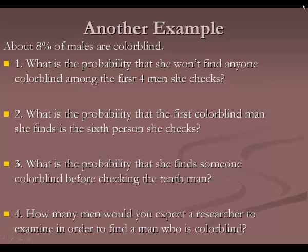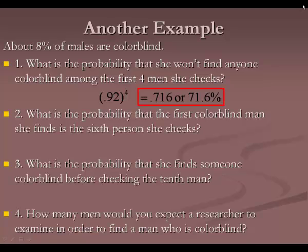Here's another example: about 8% of males are colorblind, and there are four questions to try. Question 1: what is the probability that she won't find anyone colorblind among the first four men she checks? That's 0.92 to the fourth — 0.92 is the probability that the man is not colorblind, and we want four of those. That gives 0.716, or 71.6%.